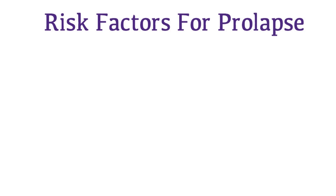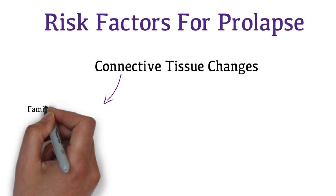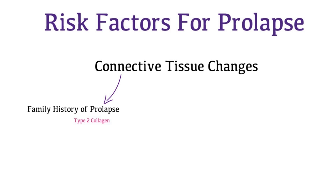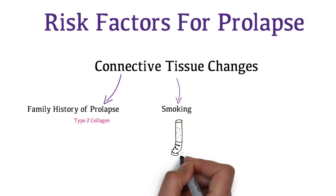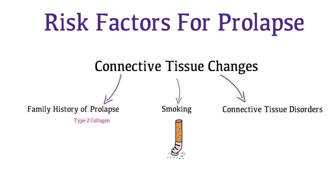Connective tissue changes are important in pathogenesis of prolapse. Having a family history of prolapse may be secondary to changes in type 2 collagen. Inhaled chemicals found in tobacco may also cause connective tissue changes. Having connective tissue disorders.